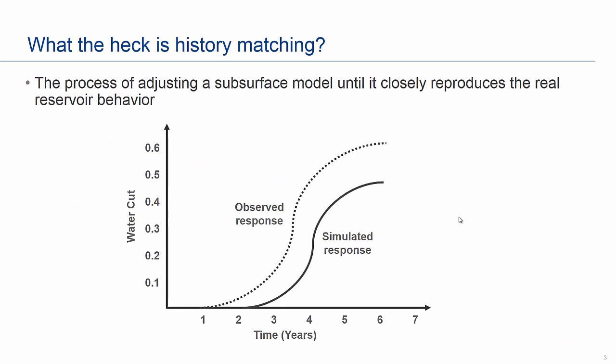So what is history matching? It is the process of adjusting a subsurface model until it closely reproduces the real reservoir behavior. This process is sometimes referred to as model calibration or data simulation. For example, comparing observed response from the reservoir against the response from a reservoir simulator — the simulation model may be under-predicting water production by almost 15 percent and also show a one-year delay in the start of water production compared to historical observations. So we need to calibrate or adjust various aspects of this model until it matches real observations from the reservoir.